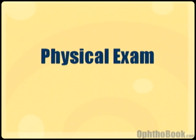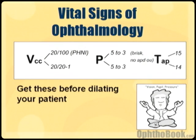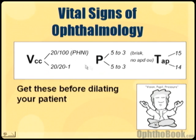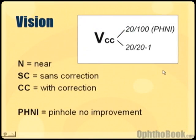Now onto the physical exam. In ophthalmology we have a different set of vital signs — the big three: V for vision, P for pupils, and T for tonometry or pressure. Vision, pupil, pressure — that is our mantra, and we get these three before doing anything else. If you put a dilating drop in a patient, it will mess up the vision, mess up the pupils, and often affect the pressure. Dilation is the rate-limiting step of our exam, so we get these three vital signs first.